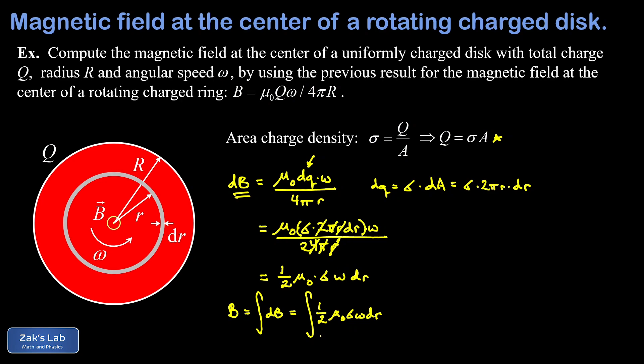So this time, again, we're adding up rings as we go all the way from the center of this disk at zero, all the way to the outer edge of the disk at capital R.